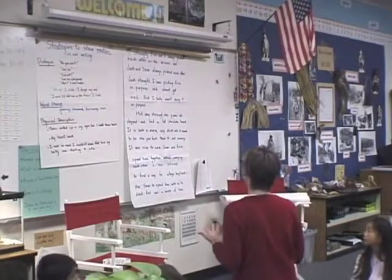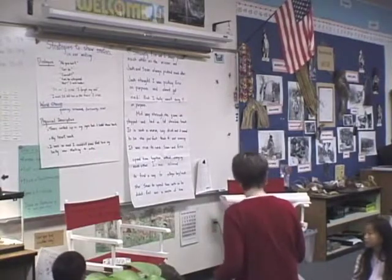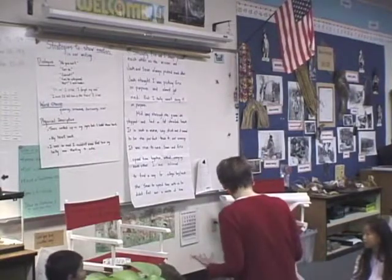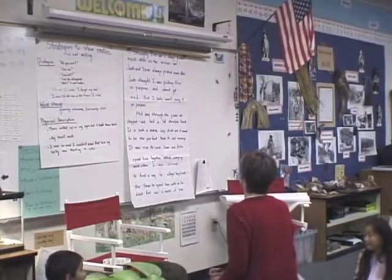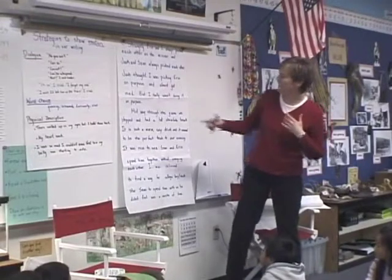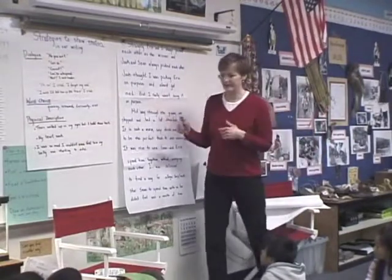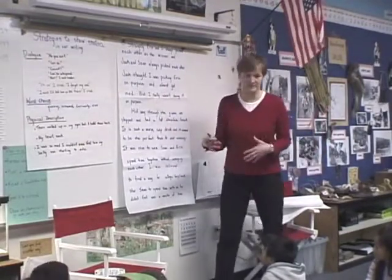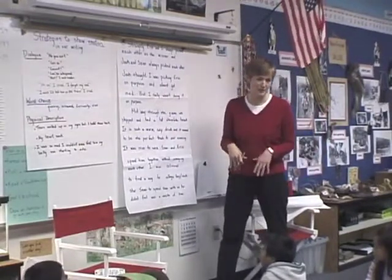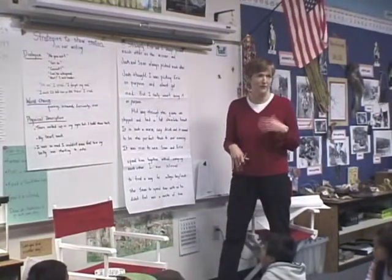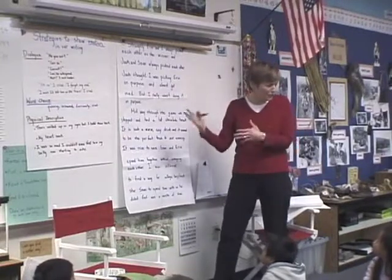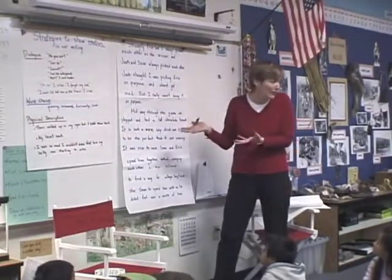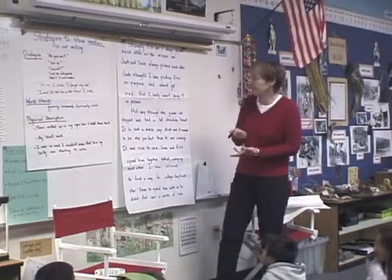Where are my emotion words — where are my words where I'm showing how I feel, or how somebody feels? The word that jumps out at me right now is 'mad.' That's an emotion, right? That's a strong emotion. So if I want to think, how can I physically show you what that looked like — what did his body look like?